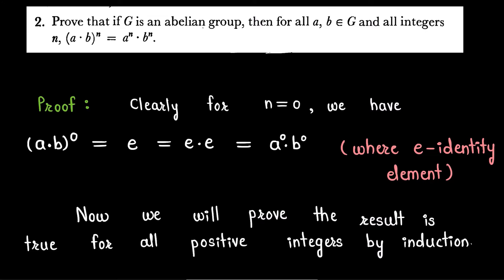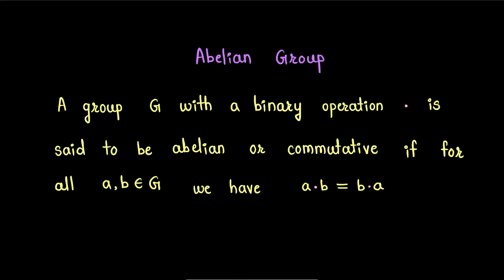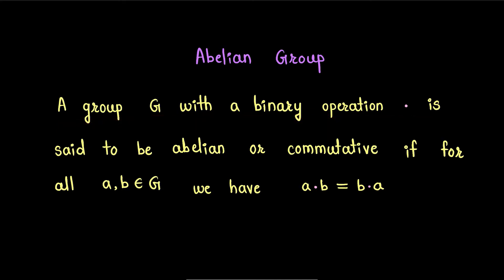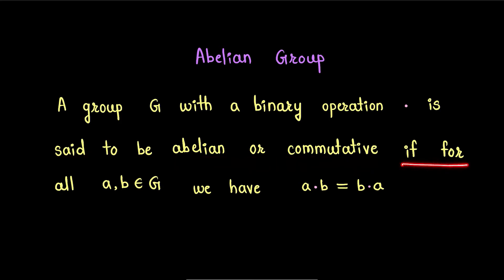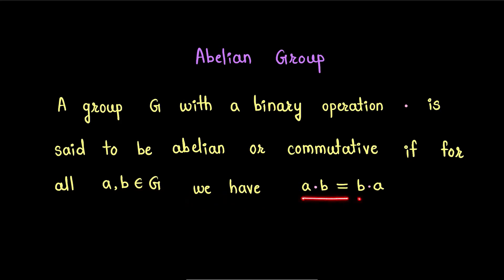Before starting our proof, we will first recall what is meant by an abelian group. A group G with a binary operation dot is said to be abelian or commutative if for all a, b in G we have a·b = b·a.